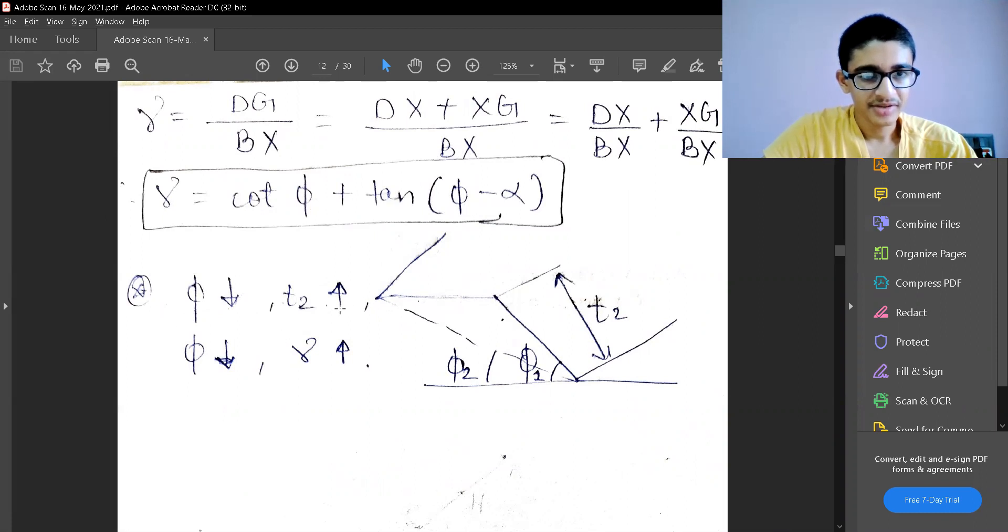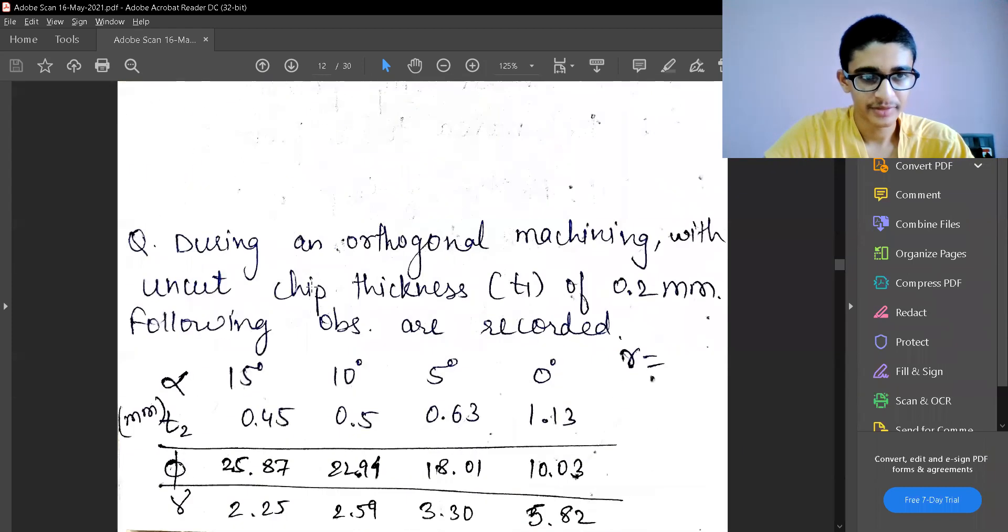As phi reduces, T2 will increase. That's the understanding here. If I reduce the value of phi, T2 increases. With smaller phi, I will have thicker chips formed, and the strain will also increase. That's the conclusion.